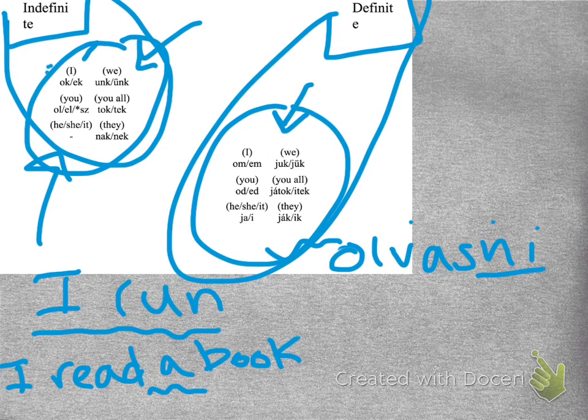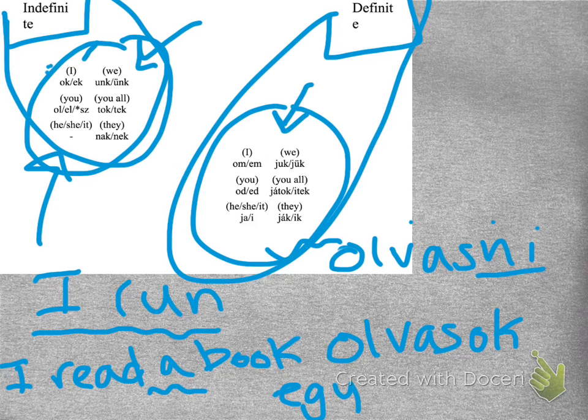And I said, I read a book, so I say, olvasok könyvet, meaning a, könyvet. So, könyv is the word for book. And this -et right here is another kind of ending, which will be explained later, so don't worry about it.